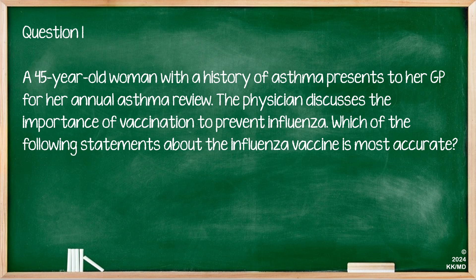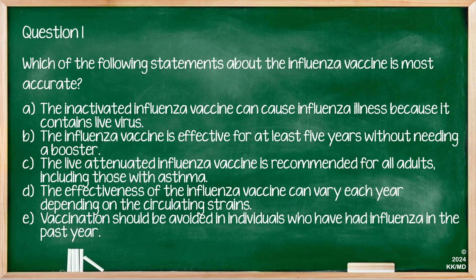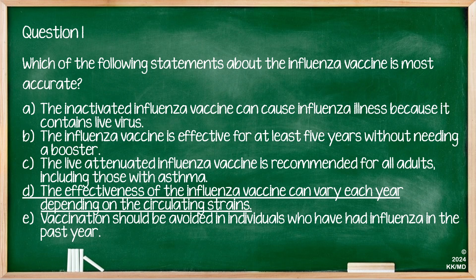Question one: A 45-year-old woman with a history of asthma presents to her GP for her annual asthma review. The physician discusses the importance of vaccination to prevent influenza. Which of the following statements about the influenza vaccine is most accurate? A) The inactivated influenza vaccine can cause influenza illness because it contains live virus. B) The influenza vaccine is effective for at least five years without needing a booster. C) The live attenuated influenza vaccine is recommended for all adults including those with asthma. D) The effectiveness of the influenza vaccine can vary each year depending on the circulating strains. E) Vaccination should be avoided in individuals who have had influenza in the past year. The correct answer is D — the effectiveness of the influenza vaccine can vary each year depending on the circulating strains, as the vaccine is updated depending on which strains are most prevalent during a given season.